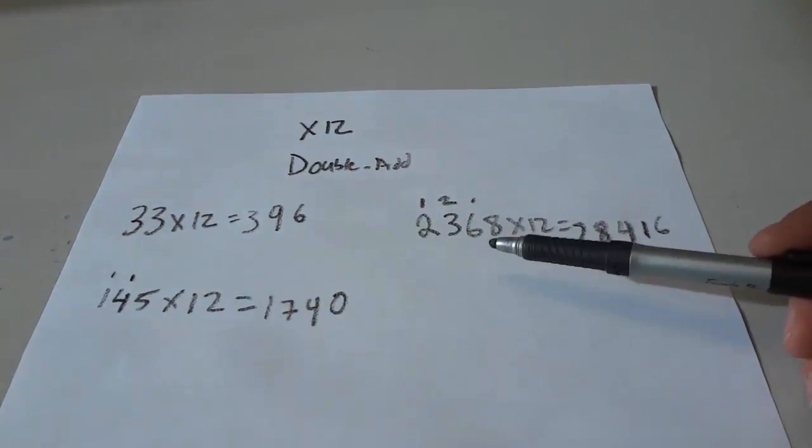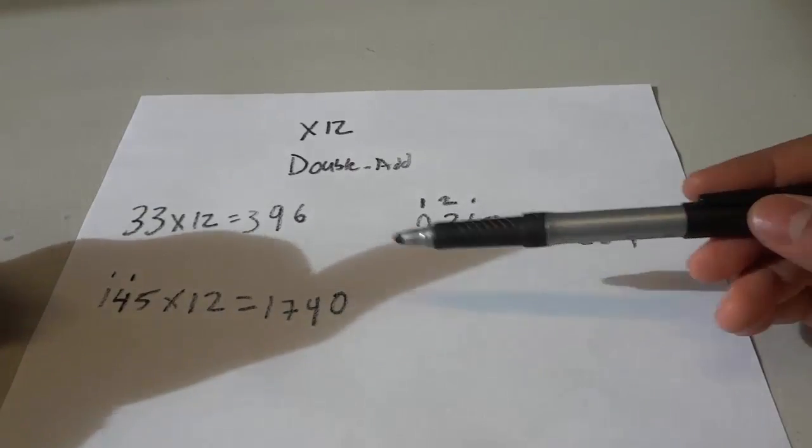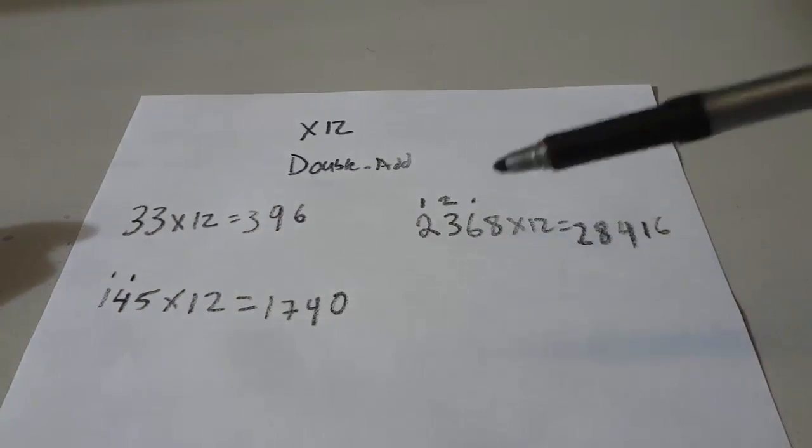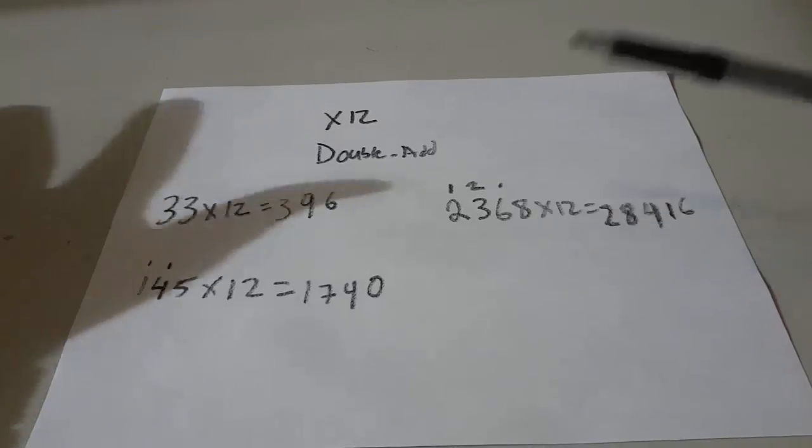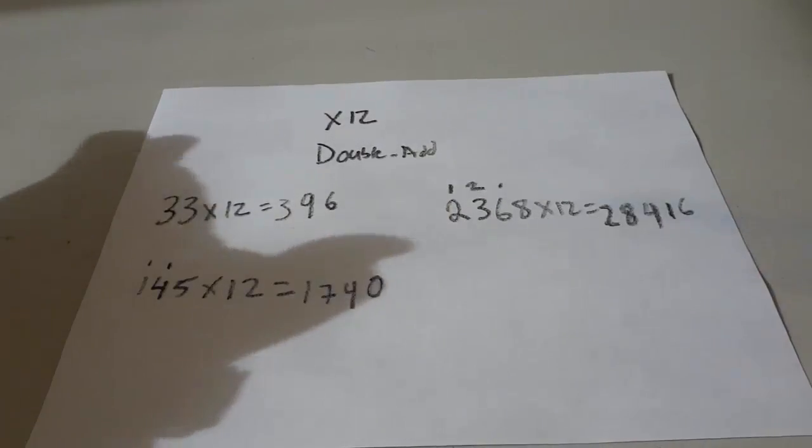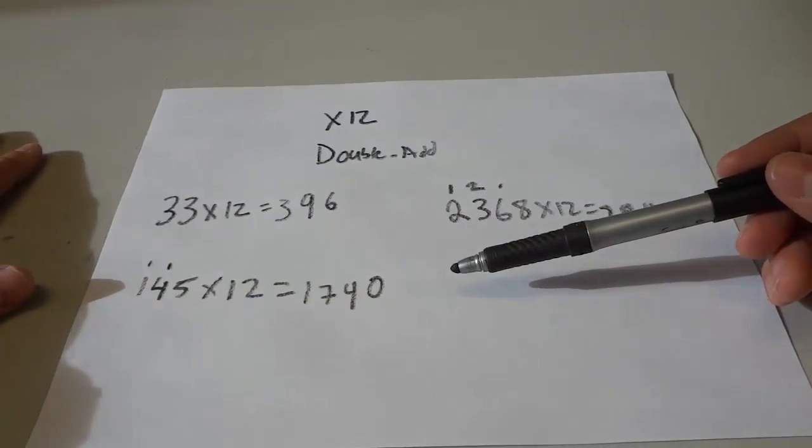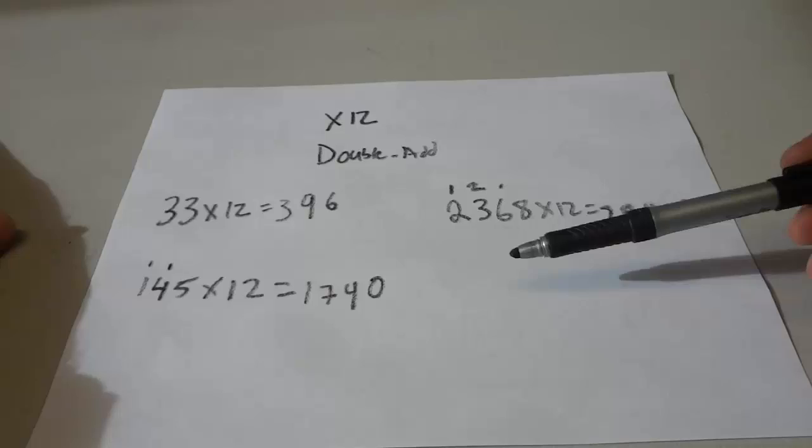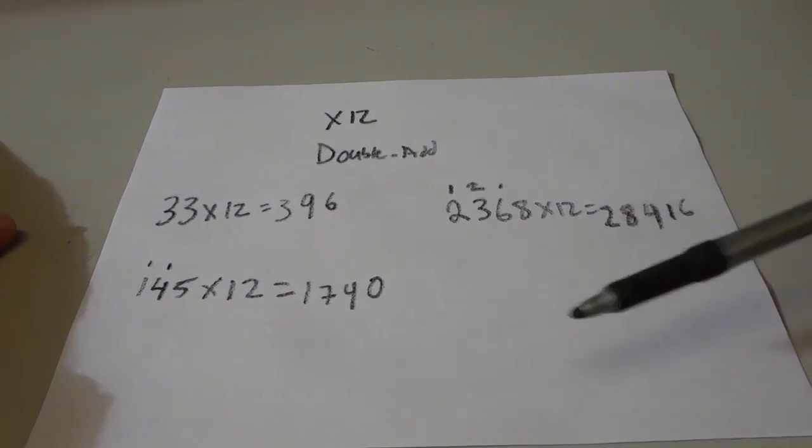You can use this math trick to multiply any number by 12. No matter how large the number is, it will work and it will allow you to do it faster and easier than you've ever done before. Obviously with the exception of using a calculator, which would be faster, but this is a very fast and easy method. It is a very simple math trick that you can use for multiplying numbers by 12. And that's all I have for you today. Thanks for watching.